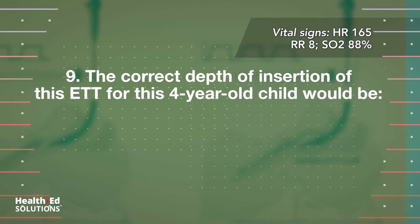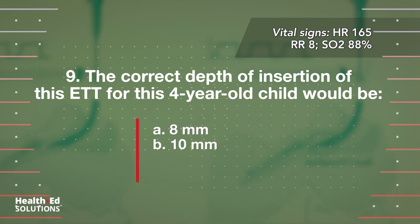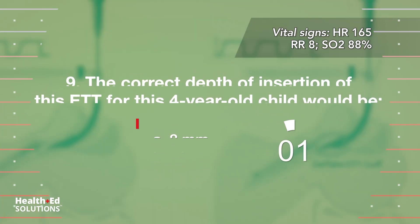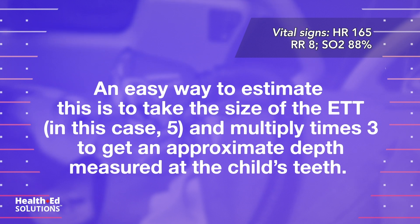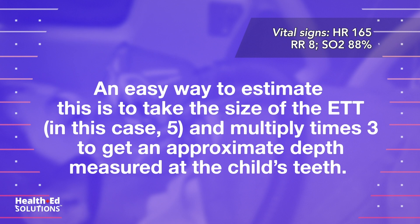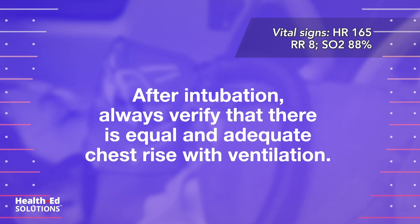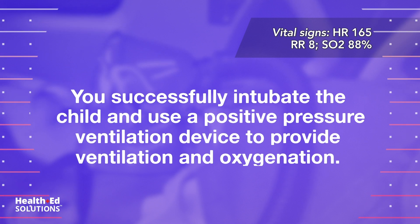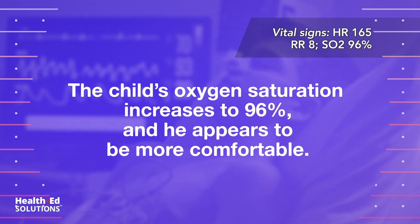Question 9: The correct depth of insertion of this ETT for this 4-year-old child would be: A) 8mm; B) 10mm; C) 12mm; D) 15mm. Correct answer D — 15mm. An easy way to estimate this is to take the size of the ETT, in this case 5, and multiply times 3 to get an approximate depth measured at the child's teeth. After intubation, always verify that there is equal and adequate chest rise with ventilation. You successfully intubate the child; chest rises symmetrically and fully, oxygen saturation increases to 96%, and he appears more comfortable. The pediatrician assumes care of the child.